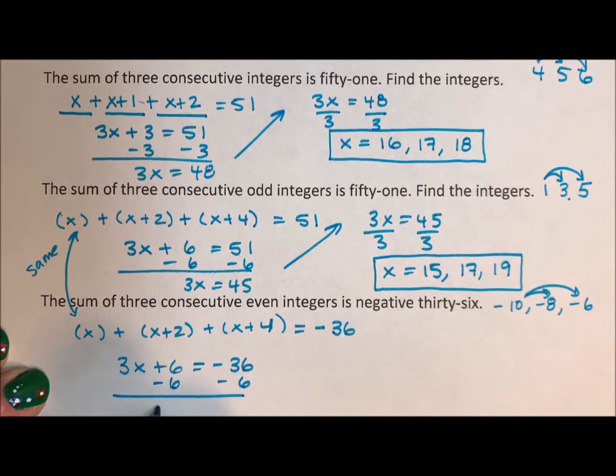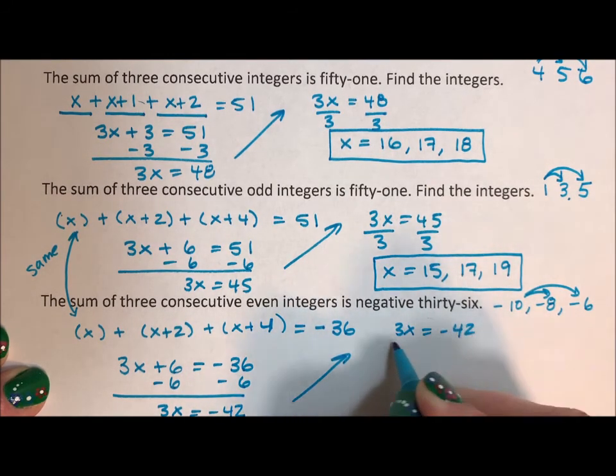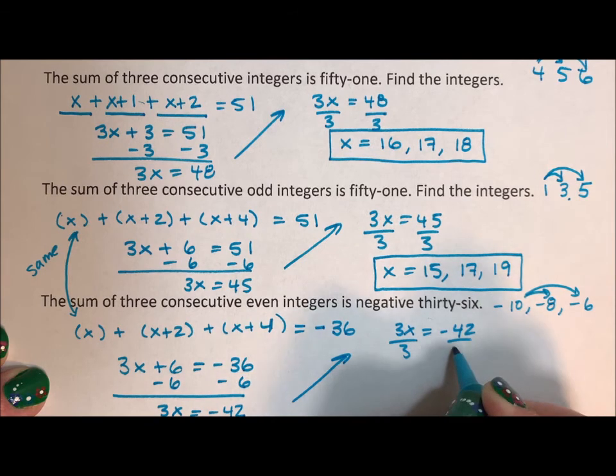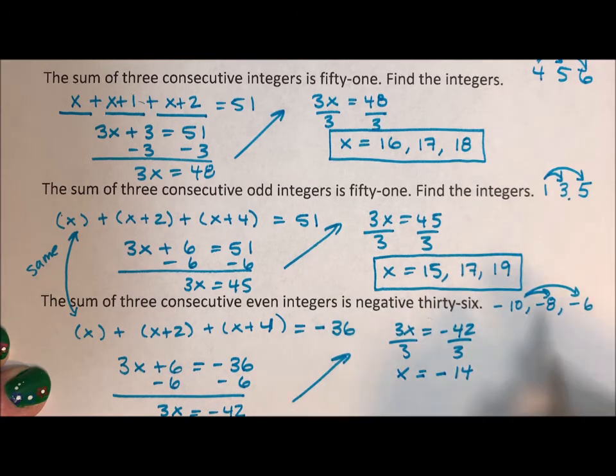I get that three x is equal to negative 42. I divide. I get x is equal to negative 14. And then again, I add. And I add again. And then I test.